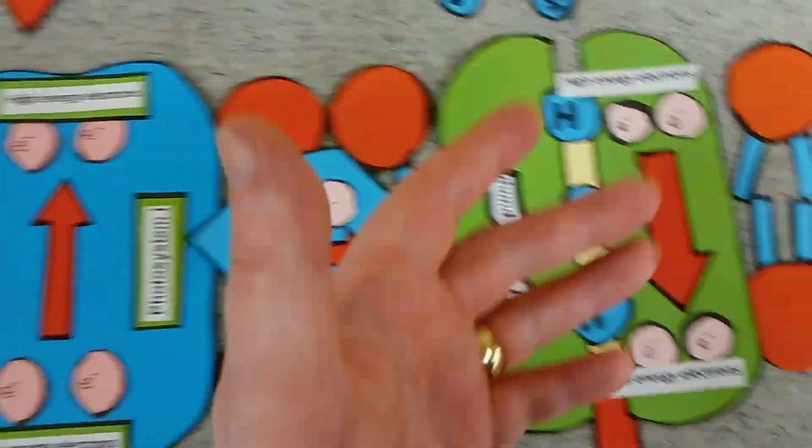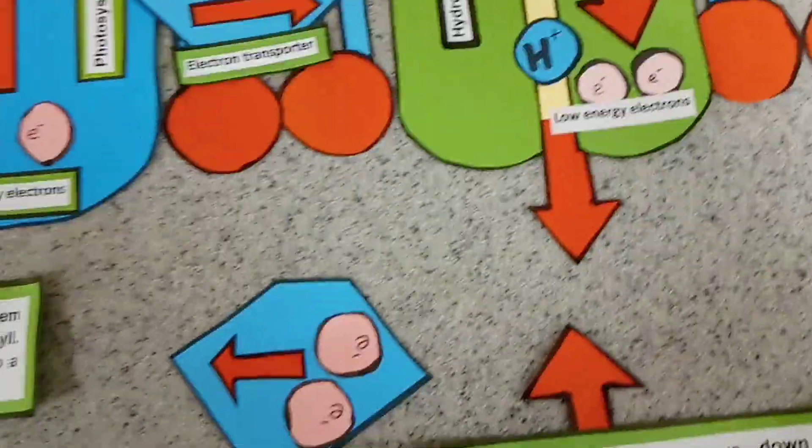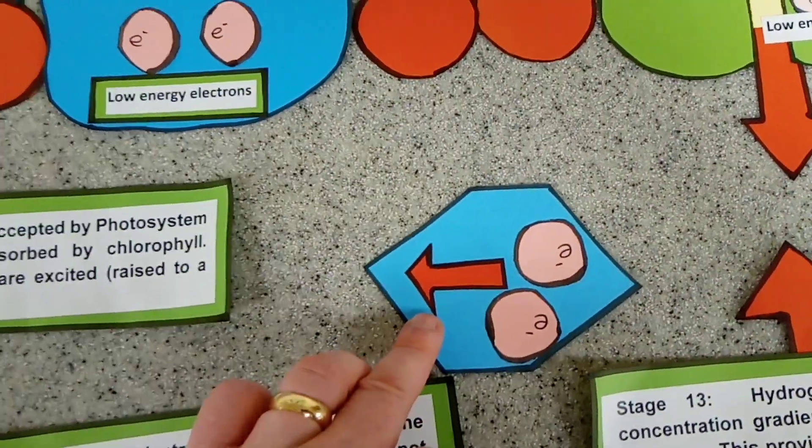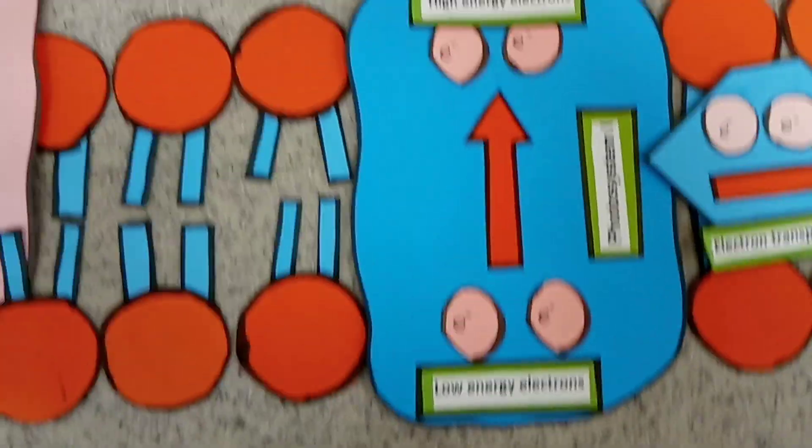They're transported to a hydrogen pump which pumps in hydrogen ions. However, the electrons are then accepted by another electron transporter which takes them back to photosystem 1. So it cycles around.